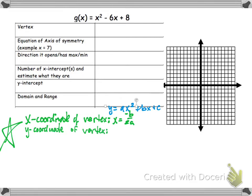So we're going to take the opposite of that number, divide it by 2 times that number, and that will give us the x-coordinate of the vertex. And we're going to take that result and plug it in for x into the equation to get the y-value of our vertex.